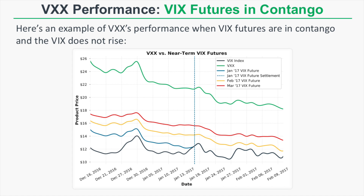After that January VIX future settles, which is the blue dashed line, the index that VXX tracks will now be tracking the February and March VIX futures. As we can see, the VIX index remains low over the time period, and we can see that the February and March VIX futures steadily lose value as they converge towards the VIX index. VXX also decreases over that period because VXX tracks the performance of those near-term VIX futures.